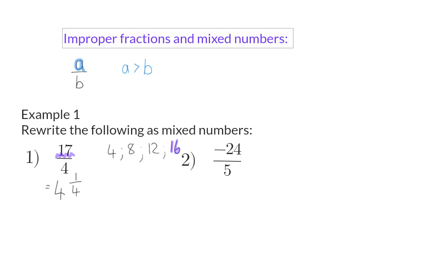In number 2, we now have a negative value. The whole value is negative, and that means that the minus is simply written in front, and the rest of the steps stay the same. This time, we're working with the multiples of 5, which will give us 5, 10, 15, 20, which means we once again have 4 complete groups of 5.